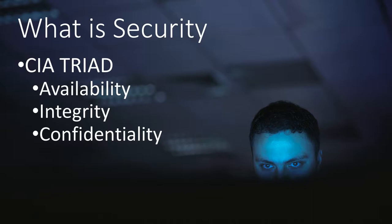We think about security in terms of availability of a system, integrity of the data, and confidentiality of the data. Is the system available? Is it suffering a denial of service attack? Is it online and functioning? Can you access it quickly? Is the data accurate — if it says somebody is in the fifth grade, are they truly in the fifth grade? And is the data that's supposed to be confidential actually confidential? There are a lot of different definitions for security, but this is one way to think through it.